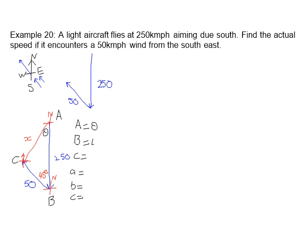B we know is 45 degrees. C we don't know. Little a is 50. Little b we're trying to find, that's x, and c is 250.